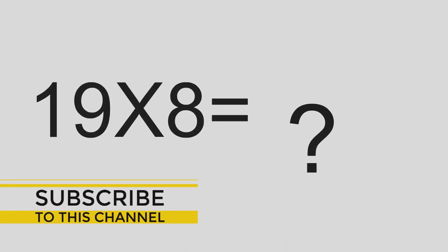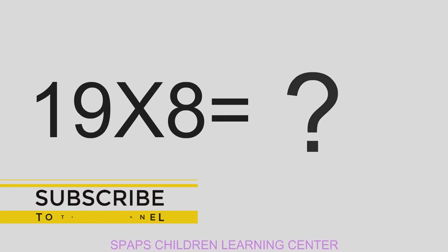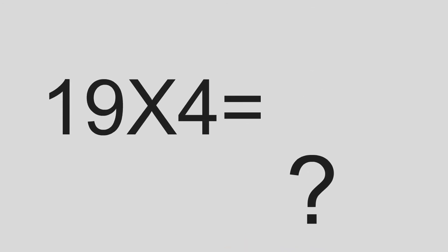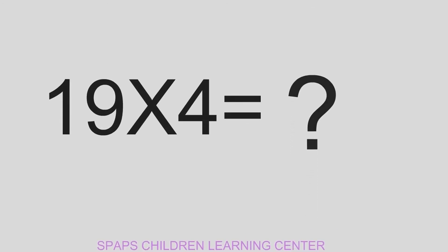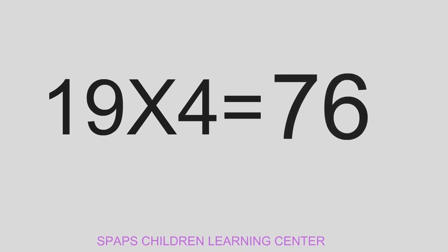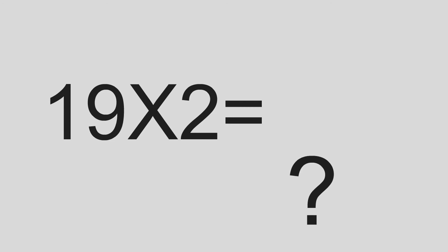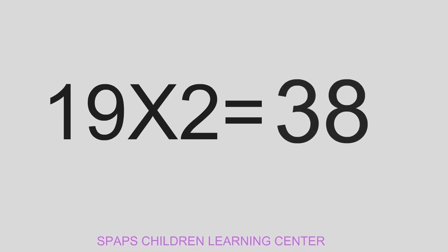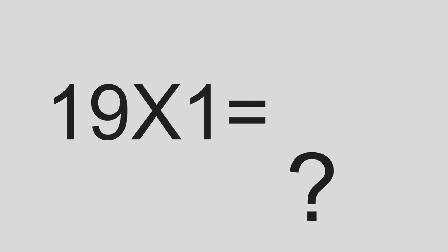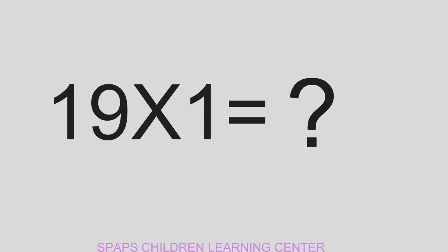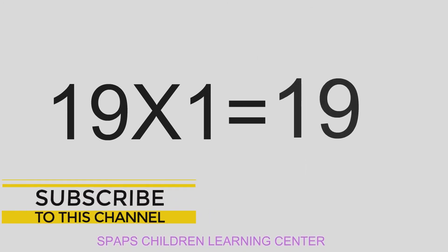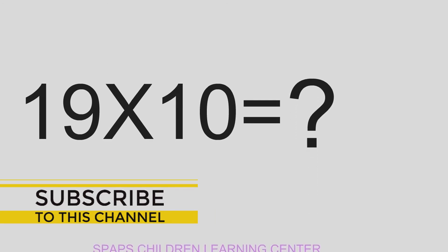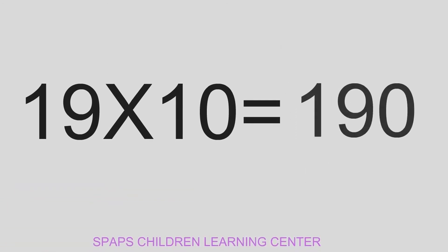19 x 8 equals to 152. 19 x 4 equals to 76. 19 x 2 equals to 38. 19 x 1 equals to 19.